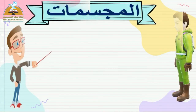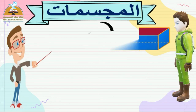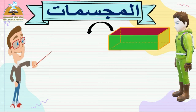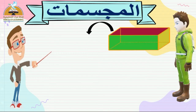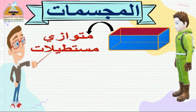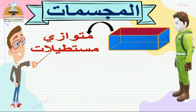أول مجسم: متوازي المستطيلات. اسمع الاسم تاني كده: متوازي المستطيلات. متوازي المستطيلات عنده أوجه بتكون على شكل مستطيل. عنده ستة أوجه، كل وجه منهم على شكل مستطيل. يبقى اسمه متوازي المستطيلات لأنه مكوّن من مجموعة مستطيلات.